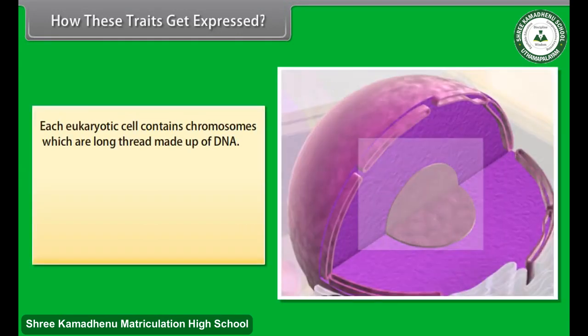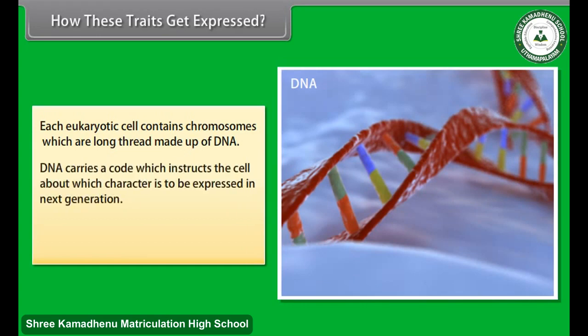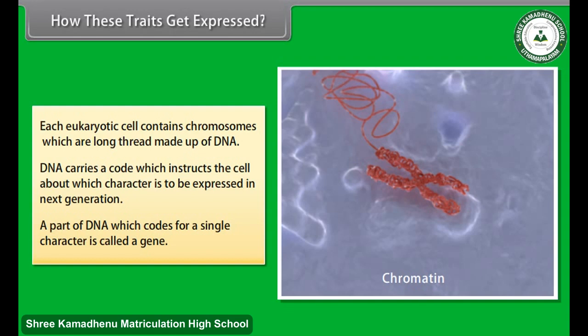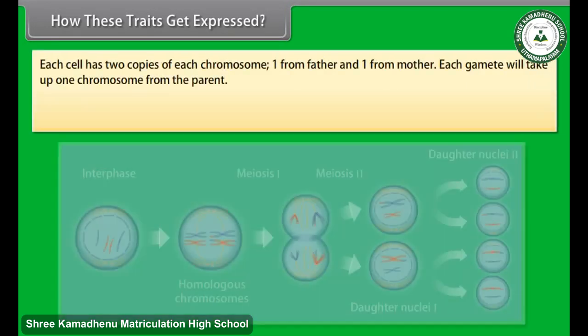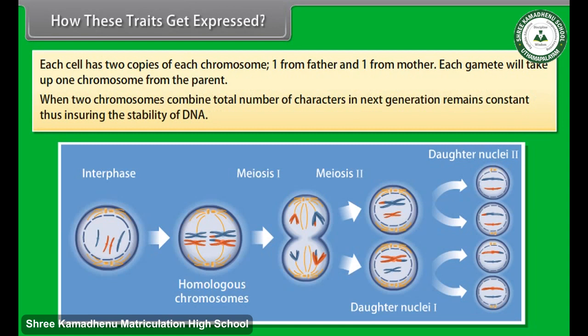How these traits get expressed: Each eukaryotic cell contains chromosomes, which are long threads made up of DNA. DNA carries a code which instructs the cell about which character is to be expressed in the next generation. A part of DNA which codes for a single character is called a gene. Each cell has two copies of each chromosome, one from father and one from mother. Each gamete will take up one chromosome from the parent. When two chromosomes combine, the total number of characters in the next generation remains constant, ensuring the stability of DNA.